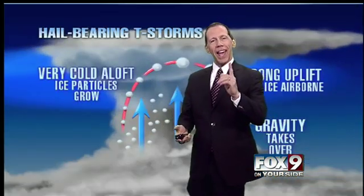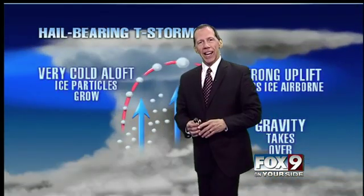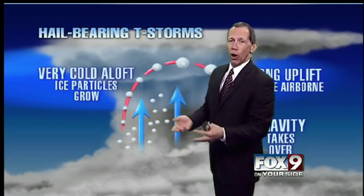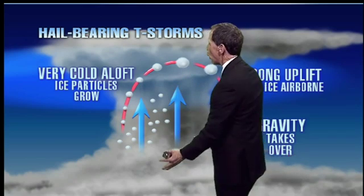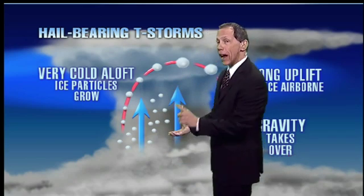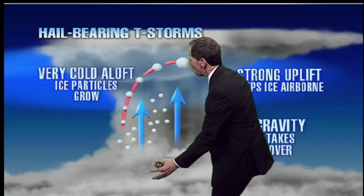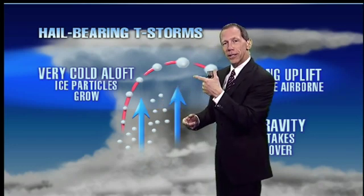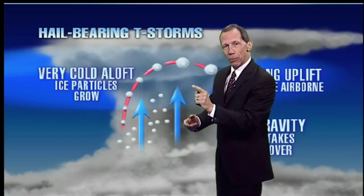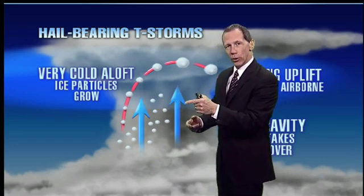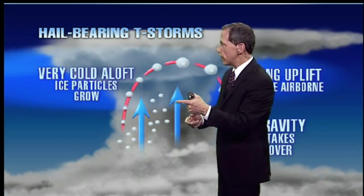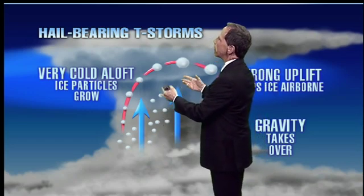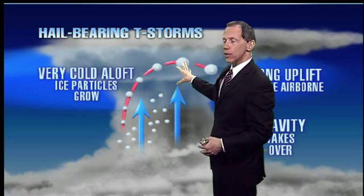Let's start first with hail. In hail-bearing storms, what we have are strong updrafts — pretty much all storms are like this as they start to grow. It's that rising air that we had talked about in class. Air rises and as it does it cools, because the pressure drops and the temperature drops. They both work together in the atmosphere. So as the air is rising, the pressure drops, the temperature drops, and there's very cold air aloft because of that.